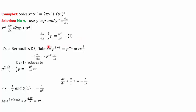We take z = p^(1−n). Here n = 2, so z = p^(−1) = 1/p. Differentiating z = 1/p with respect to x: dz/dx = −p^(−2)·dp/dx. Substituting dp/dx = −p²·dz/dx into equation 1, and then substituting 1/p = z, we get the linear differential equation dz/dx + (2/x)z = −1/x². Here P(x) = 2/x and Q(x) = −1/x².